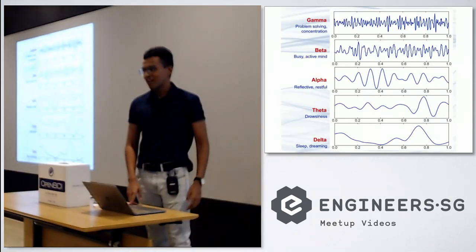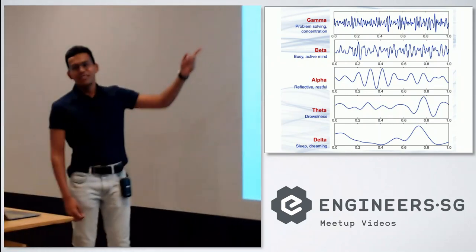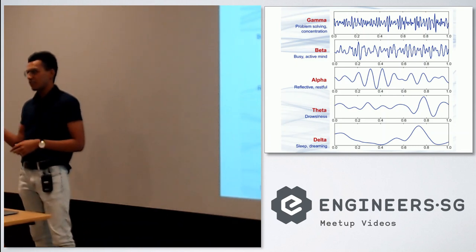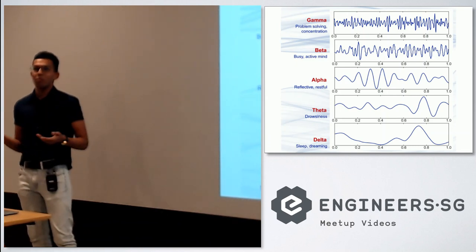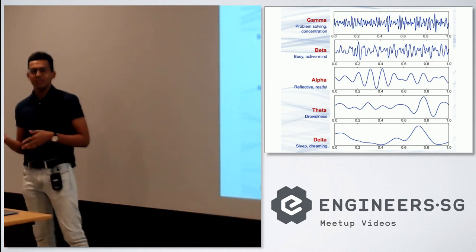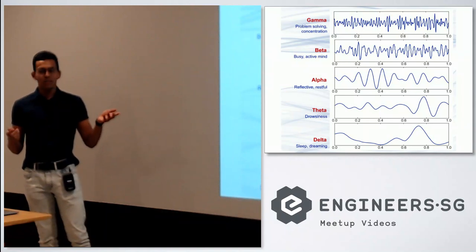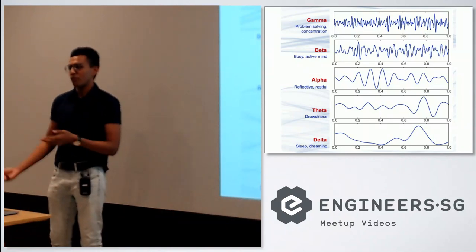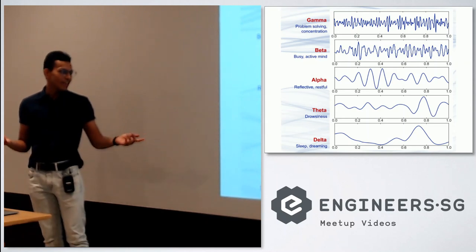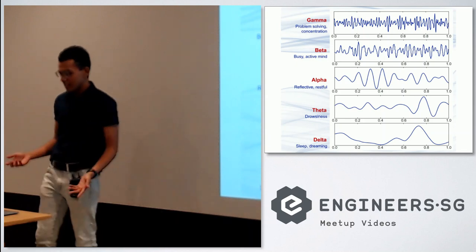You can look at what these graphs represent. Gamma waves are typically seen when you're problem solving, or when specifically that area of your brain the electrode is reading is undergoing some sort of problem-solving behavior. Beta is slightly active — not really concentrating, but more active than normal. Alpha is when you are resting that part of your brain; so if you're not moving your arm, you'll typically see alpha waves from that part. Theta is drowsiness — you're about to fall asleep. And delta is when you're actually in proper deep sleep.